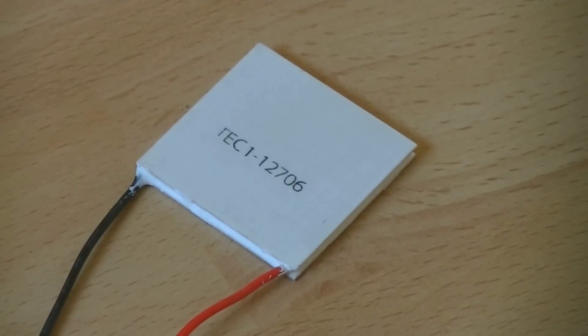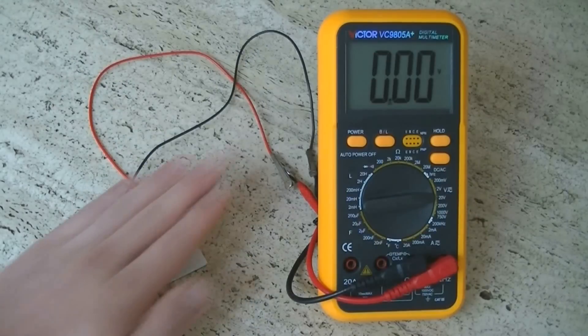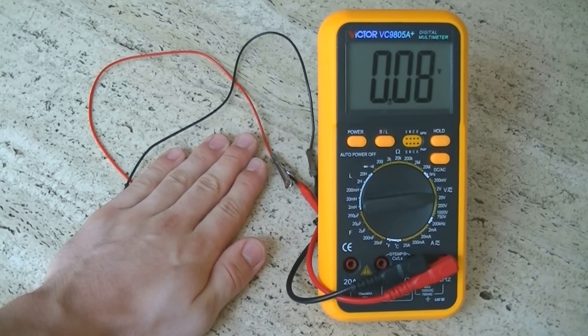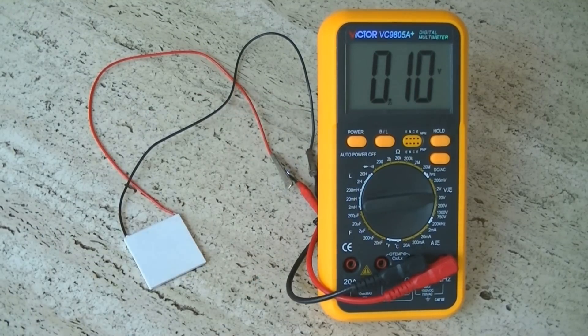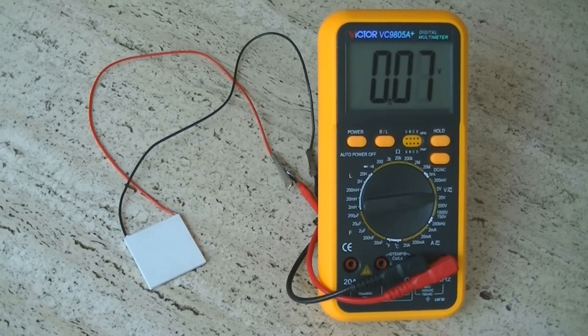Let's see together what happens. I put my hand on one side of the Peltier module. The other one stays cold as it's pressed against the stone. We can already observe that more than 0.1V is produced with that temperature difference. We even managed to run a tiny motor with 4 modules in series.